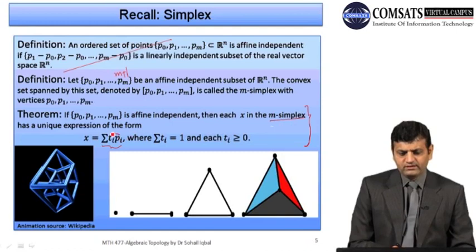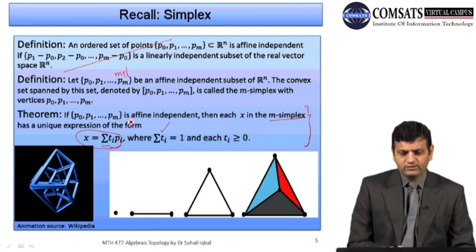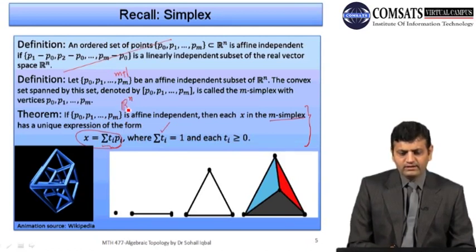The condition on the coefficients is that the sum of the t_i's must equal 1 and each t_i must be greater than or equal to 0. These p_i's are points of some Euclidean space ℝ^n and we are taking these barycentric combinations in ℝ^n.